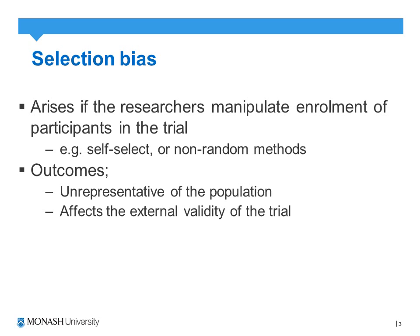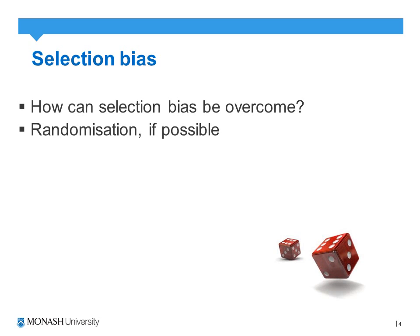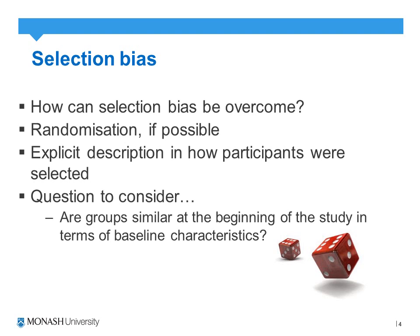This may affect the external validity of the trial or the generalizability of the study. For instance, if selection bias occurs and the intervention group is much younger and healthier than the comparison group, then the external validity of the trial is compromised. The obvious method to overcome selection bias is randomization, using simple randomization, stratified randomization, or block randomization, along with a detailed description of how participants were selected and allocated to the two groups.